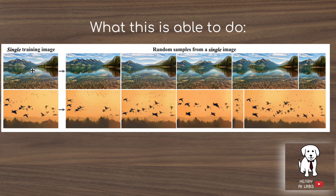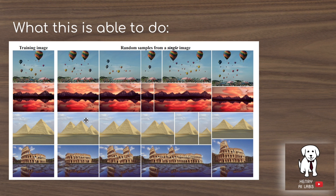You see how in this original mountain image, the generated image has put the mountain in the middle differently from the original. With the birds, it permutes the bird ordering in the flock, preserving semantic structures like having trees underneath the birds. We can see more examples with the hot air balloons, the pyramids, and the coliseum, showing how the SYNGAN model constructs new images from just a single training image.